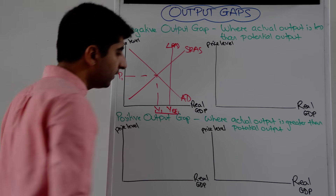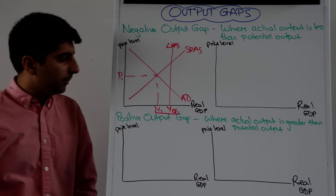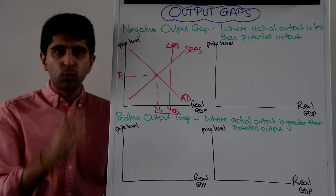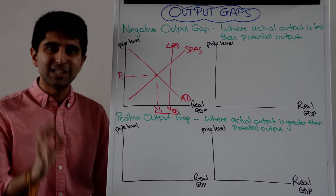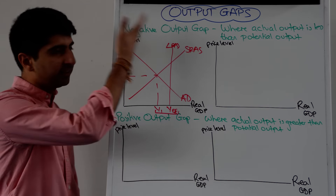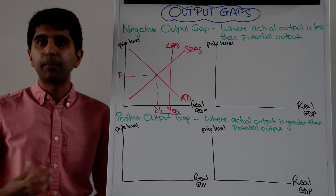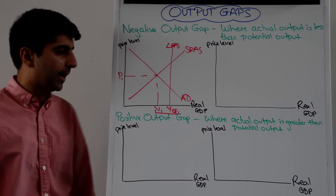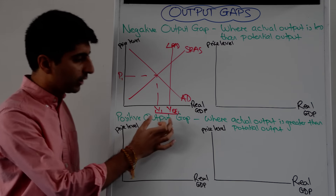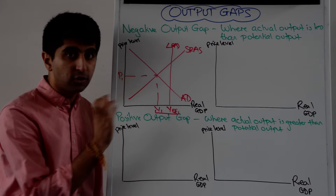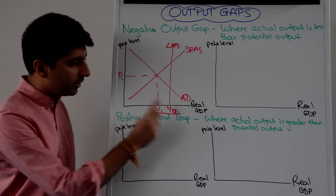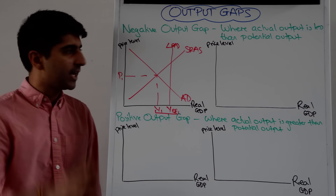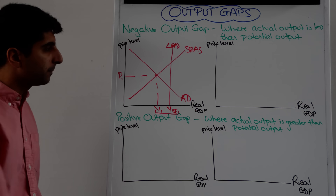The difference between Y1 and YFE is the negative output gap, or the deflationary gap, or the recessionary gap — whatever you want to call it. Actual level of output is less than the potential level of output.